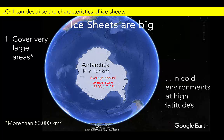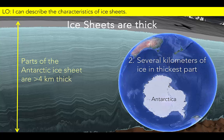To cover such a large area, ice sheets must also be very thick. There are several kilometers of ice sitting on top of Greenland and Antarctica. Consequently, the ice sheet covers every landform, with the exception of some particularly tall mountains.